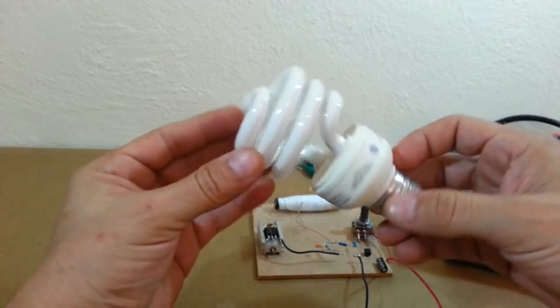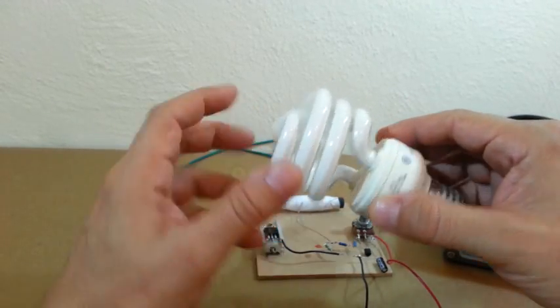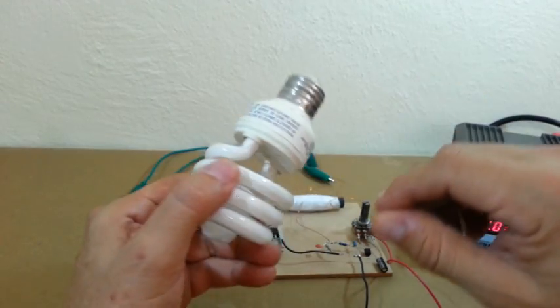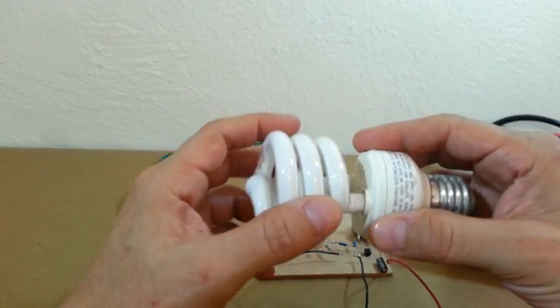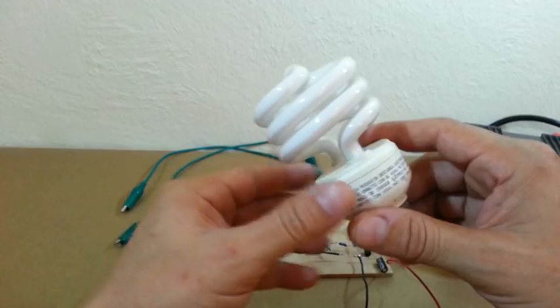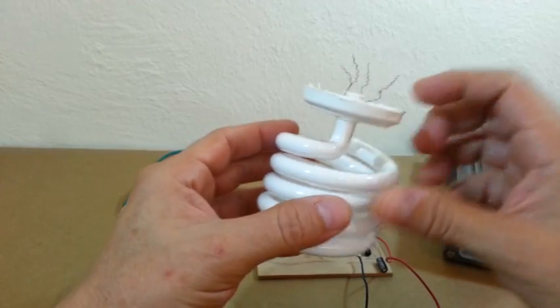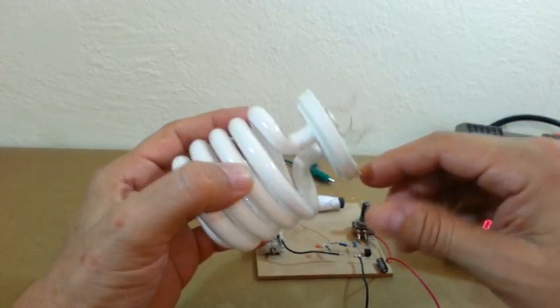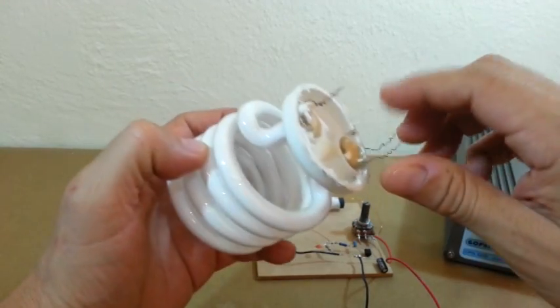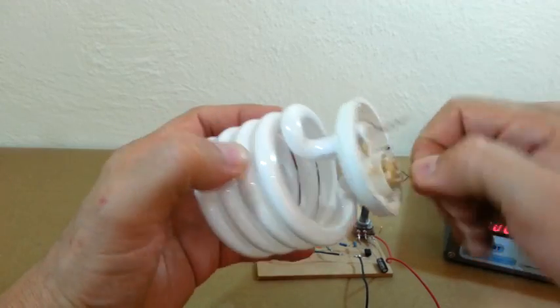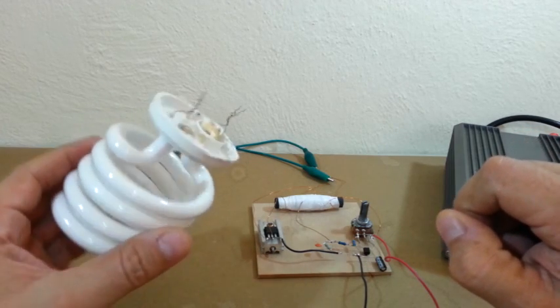When CFL lamps like this fail, normally the bulb is still in good condition and what is broken or burned is the circuit inside the lamp. So we can recycle them and use our inverter to power the bulb. When you open the lamp, you can see that the bulb has four connections, two at each side. What you will do is join the two wires from each side together, and then connect the lamp to the output of the inverter, to the secondary of the transformer.